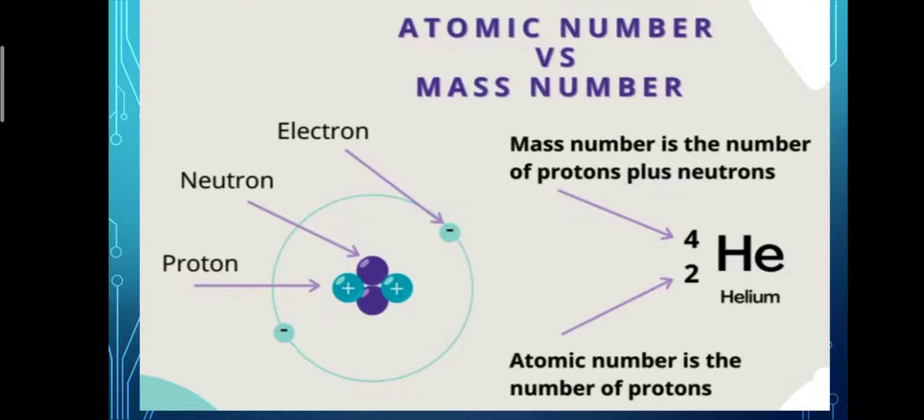Before starting atomic mass or mass number, let's review the atomic number. Atomic number is the number of protons present in the nucleus. For example, helium. The atomic number of helium is 2. It means helium nucleus contains 2 protons.